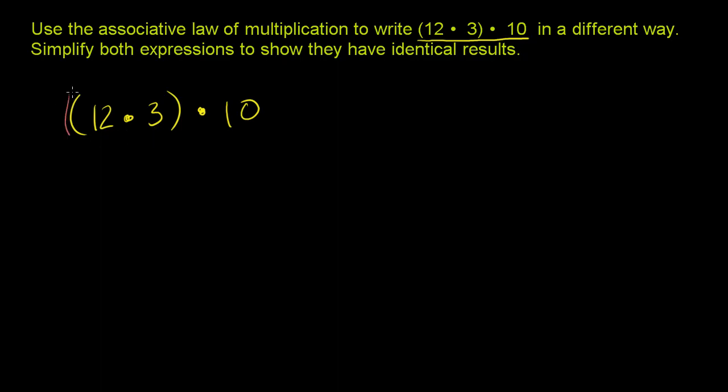So this literally says, let's do the 12 times 3 first. Now what is 12 times 3? It's 36. So this evaluates to 36, and then we still have that times 10 over there.